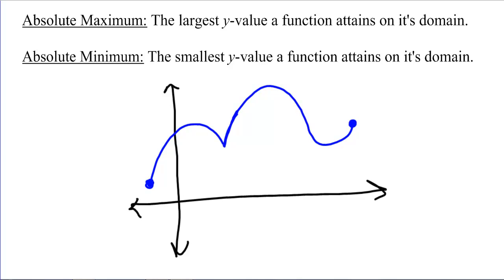The absolute maximum that a function has is the largest Y value that a function obtains on its domain. In the graph below, the absolute maximum occurs right here. This is the highest Y value of all the Y values on this graph.